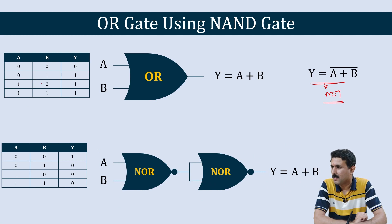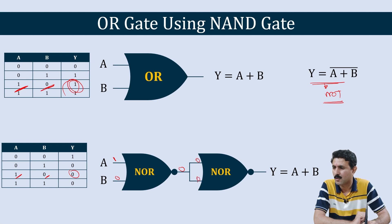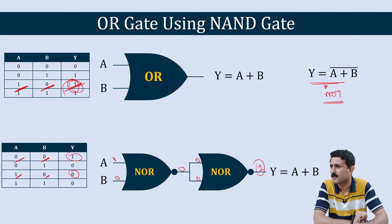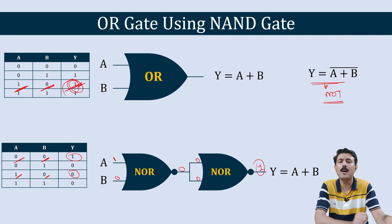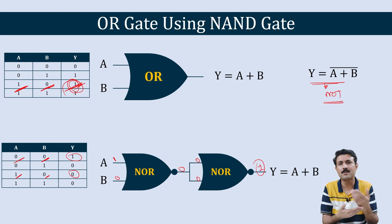Let us verify: in OR gate, if A = 1 and B = 0, the output is 1. With A = 1 and B = 0, the output of the first NOR gate is 0. Both inputs to the second NOR-as-NOT gate are 0-0, so the output is 1 — which matches. That is how we prove this circuit is logically equivalent to an OR gate, or that we have created an OR gate using NOR gate.